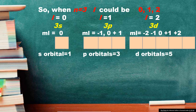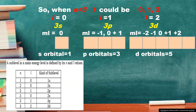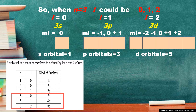When N is equal to 3, L could be 0, 1, or 2. If L is 0, you are referring to 3S, and ML equals 0 — so S orbital has only 1 orbital. If L is equal to 1, you are referring to 3P, and the ML values are negative 1, 0, positive 1. Since you are referring to P orbitals, the number of orbitals for P is 3. For D orbitals, ML values would be negative 2, negative 1, 0, positive 1, and positive 2, giving 5 D orbitals.